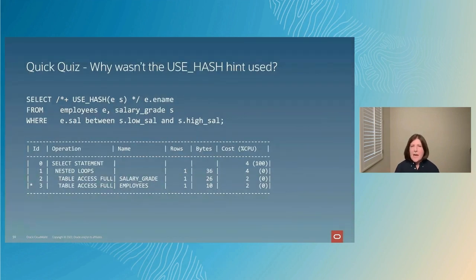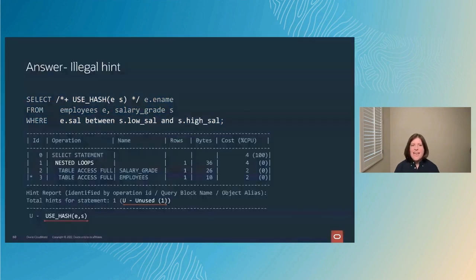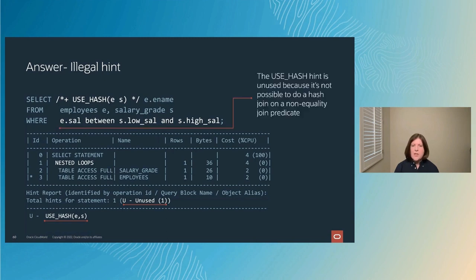Third case: I'm asking for a hash join between the employees table and the salary grades table using USE_HASH with correct table aliases and correct placement. But I get a nested loops join. The hint report shows the USE_HASH hint is unused. The reason: I'm using a BETWEEN clause as my join predicate, not an equality predicate — and as noted earlier, you can't use a hash join without an equality join predicate.